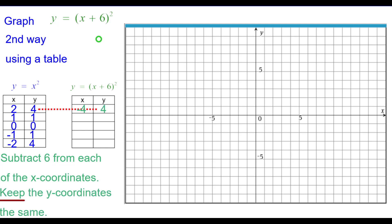So 2 minus 6 is negative 4. We keep the y coordinates the same because they're not affected by that plus 6 inside the squaring function. So negative 4 comma 4. 1 minus 6 is negative 5 comma 1. 0 minus 6 negative 6 comma 0.